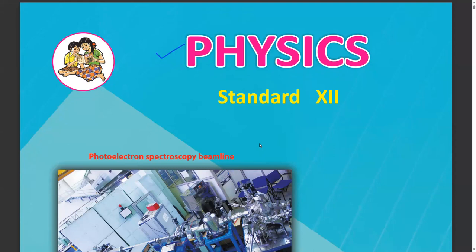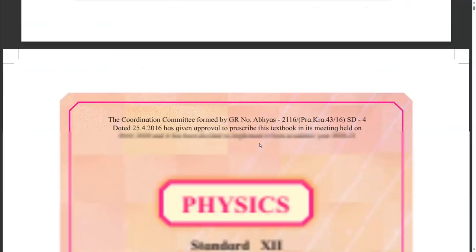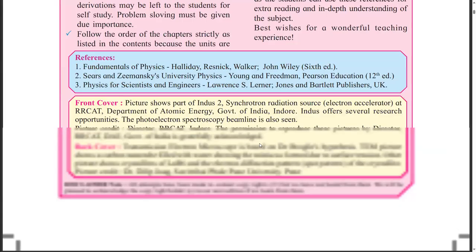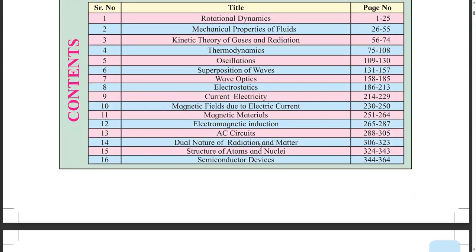So today we will start 12th physics. There are total 16 chapters. In previous classes, we have started rotational dynamics. So can you continue this or we can start with any easy topic so that you can understand better, like current electricity?